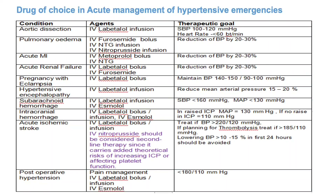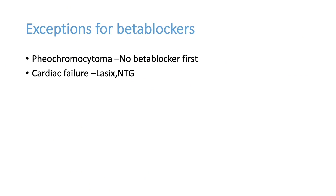Labetalol has both beta-blocking and some alpha-blocking action, making it a combined beta plus alpha blocker. Exceptions for beta blocker use: in pheochromocytoma, start alpha blocker first then add beta blocker. In cardiac failure, give Lasix and NTG first; only add a beta blocker after echo confirms no cardiac failure. In pregnancy, magnesium sulfate is the first-line drug, then add beta blockers. We have discussed various aspects of hypertensive emergency and its management in the ER.